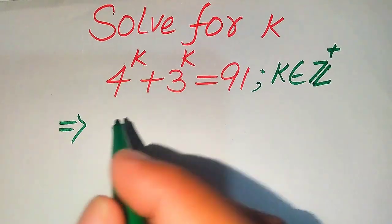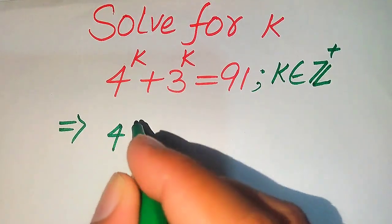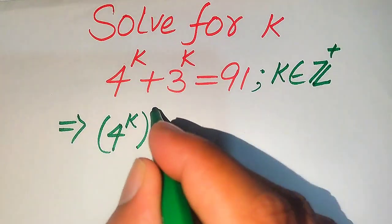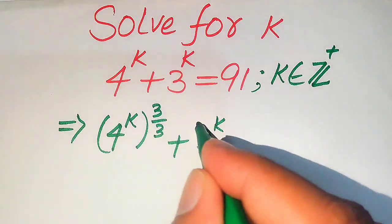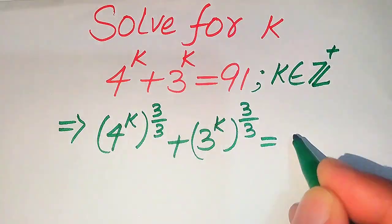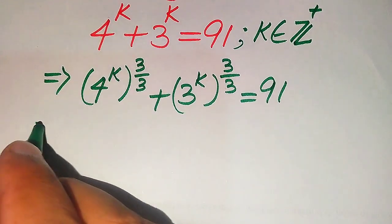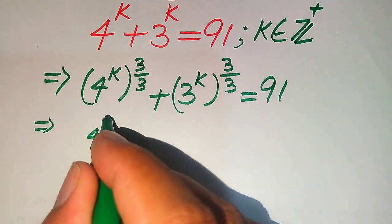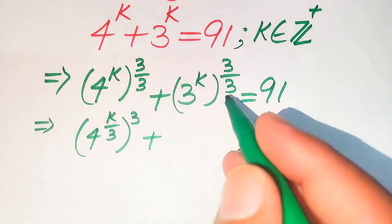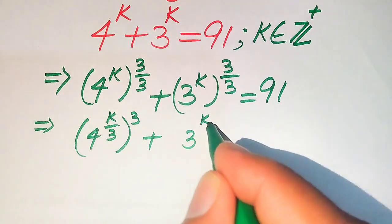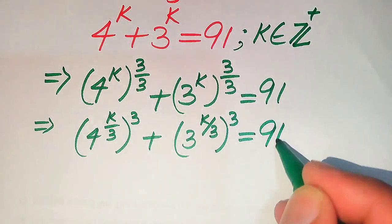The very first thing we are going to do is multiply and divide the exponent of both terms by 3. So it will be written as 4 to the power of k times 3/3, plus in the same pattern 3 to the power of k times 3/3, equals 91. We then move the 1/3 inside each term, giving us (4^(k/3))³ plus (3^(k/3))³ equals 91.